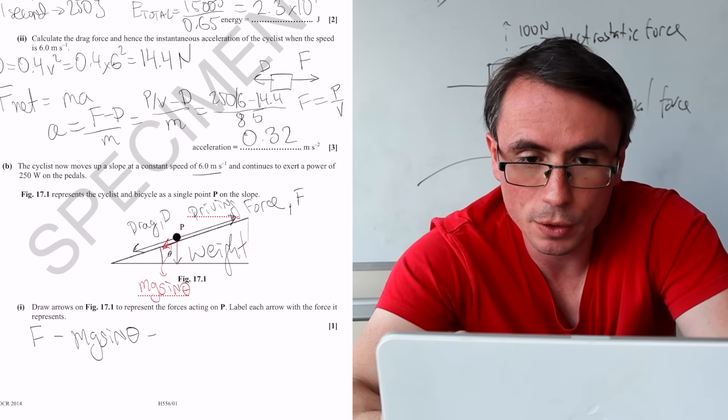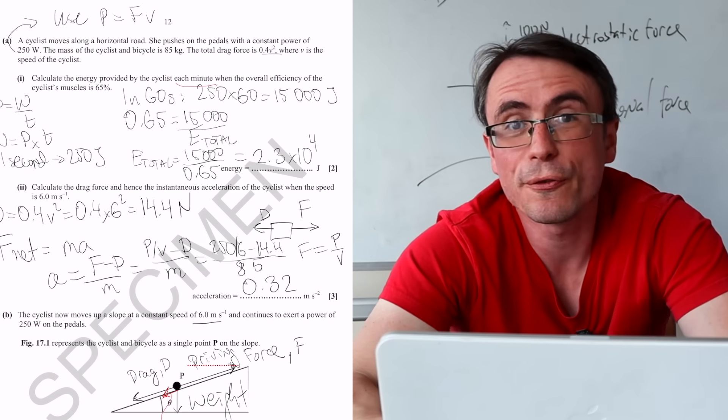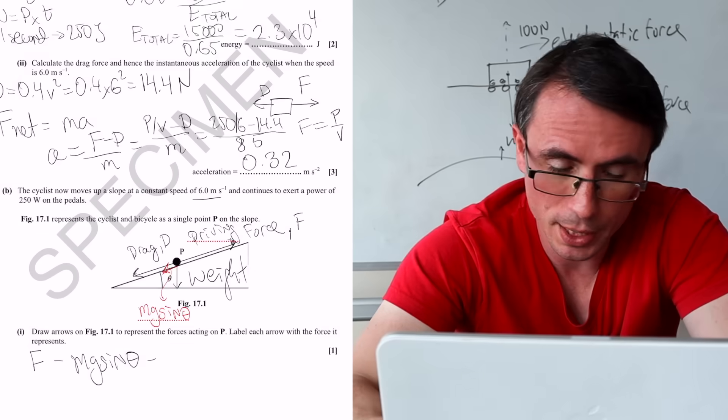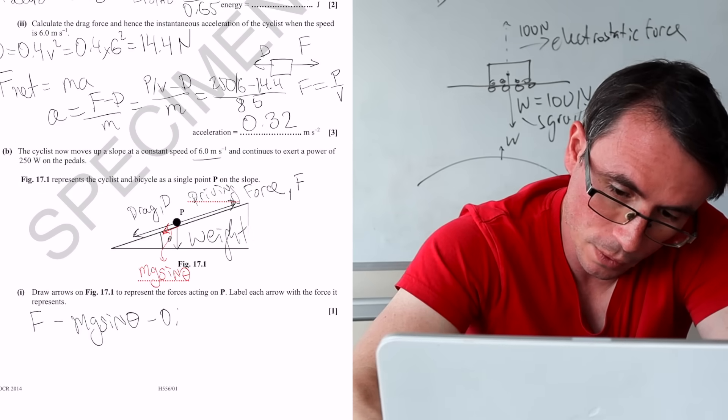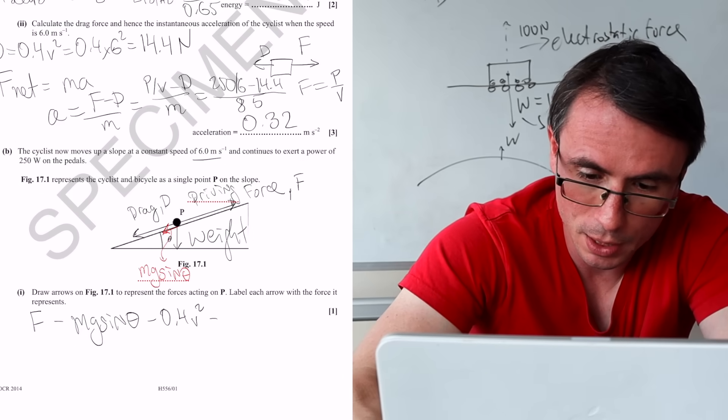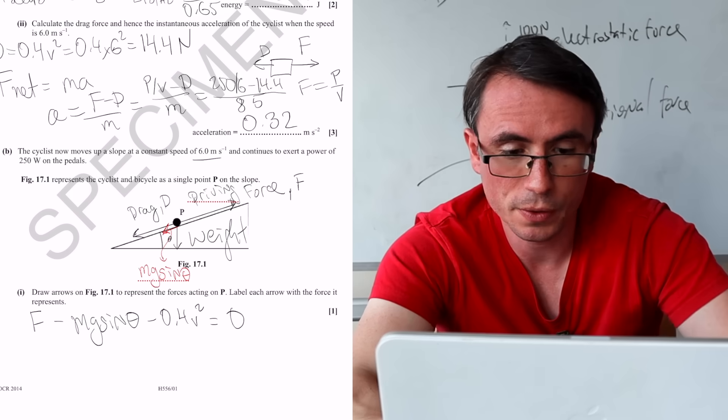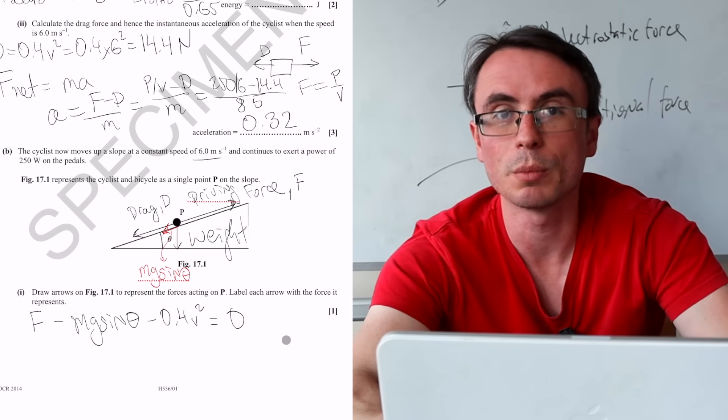take away the drag force, but the drag force was given in the question to be 0.4V squared. So we can write 0.4V squared has to be equal to zero. In other words, the driving force has to be equal to both of these.